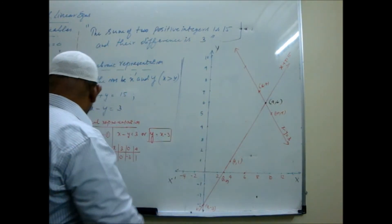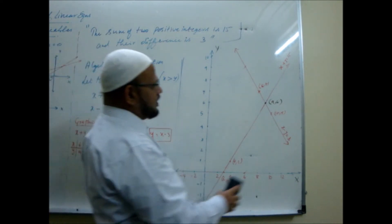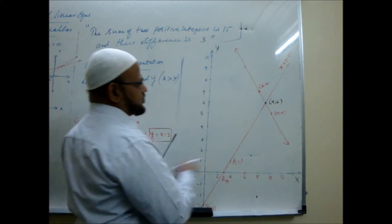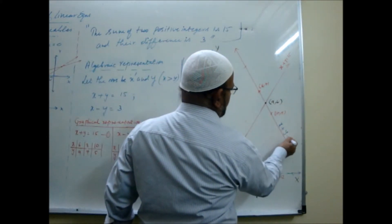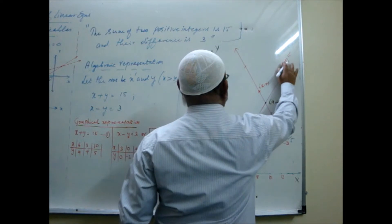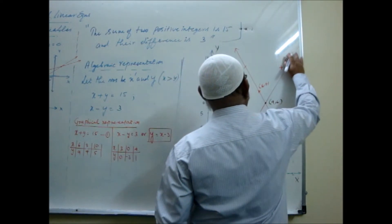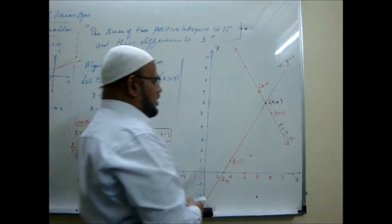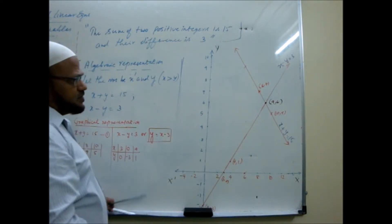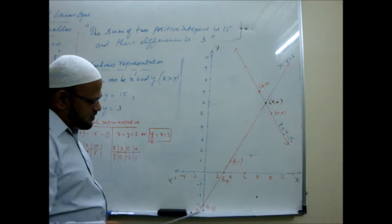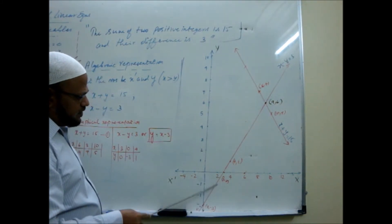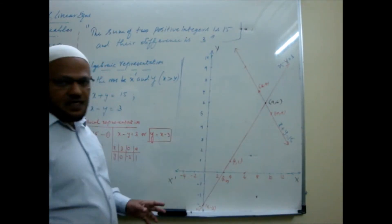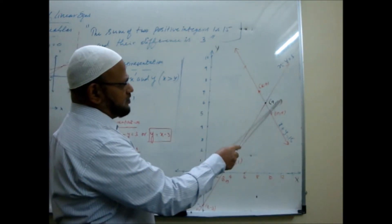This line is x plus y is equal to 15. And the other line is x minus y is equal to 3. So you are plotting the points. When you plot, I have plotted the second set. Here 0, minus 3, 3, 0, 4, 1. This point plot on these lines. When I check, the two lines intersect at the point. Here is the point of intersection.